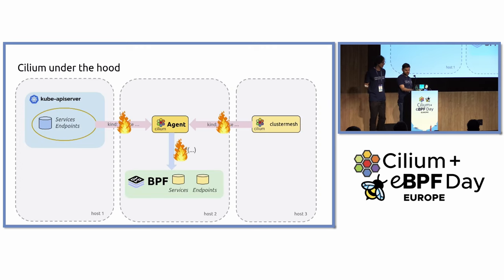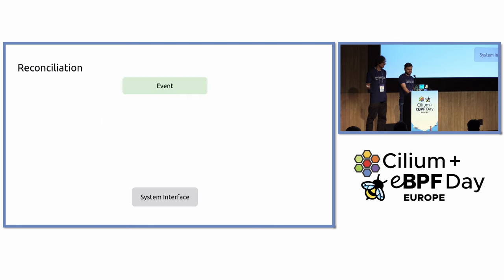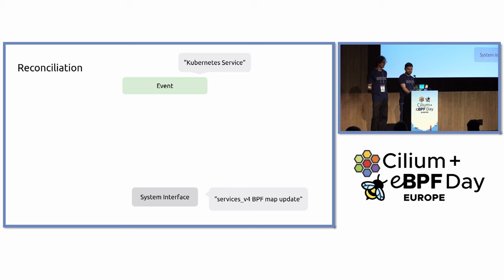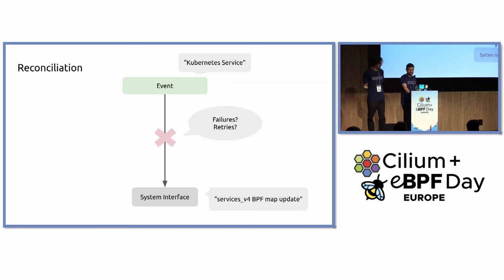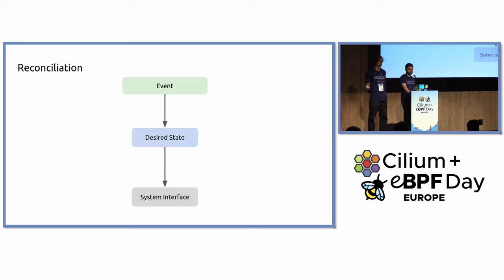Zooming into how the agent manages reconciliation into the BPF maps — let's take a simple example of the Kubernetes API server giving us an event about a Kubernetes service being created and we want to write it into the services BPF map. One thing the agent could do is directly write on receiving the event, but this doesn't really work since the map might be full and we might not be able to do this operation right then and there. We might need to retry it in the future, so we need something in between — a data store to hold the event and schedule reconciliation separately.